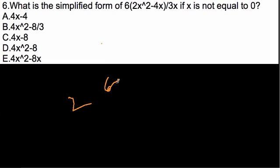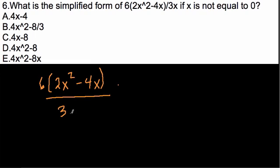First we have, well, rewrite it for us, we have 6 times 2x squared minus 4x all over 3x.